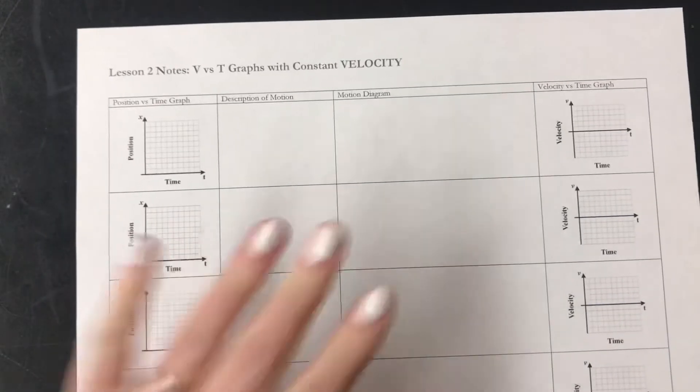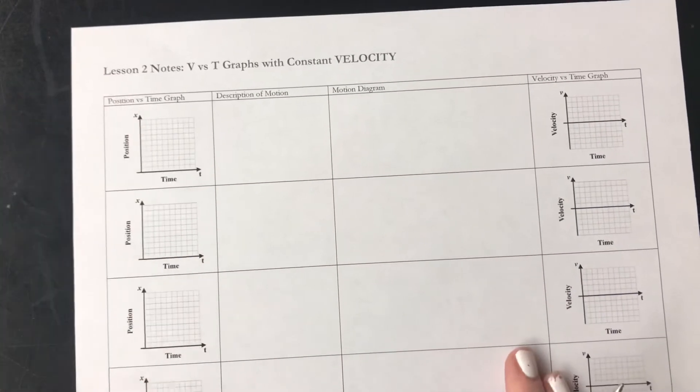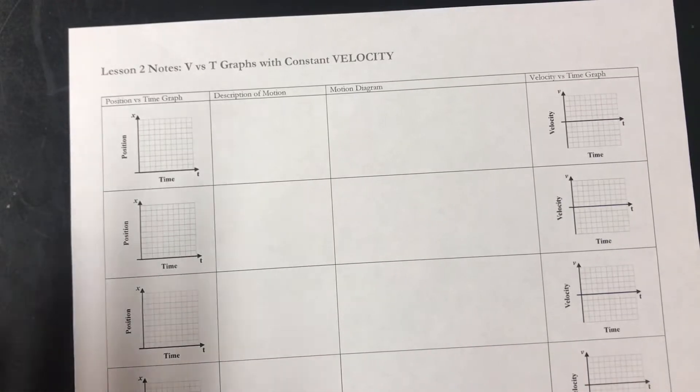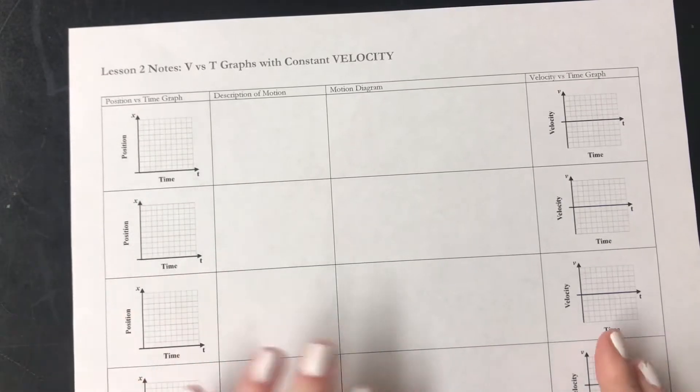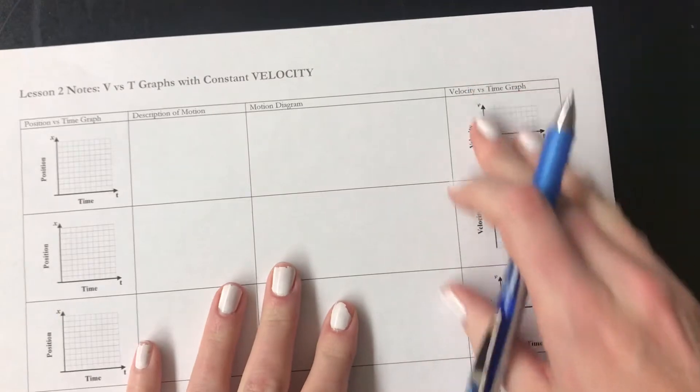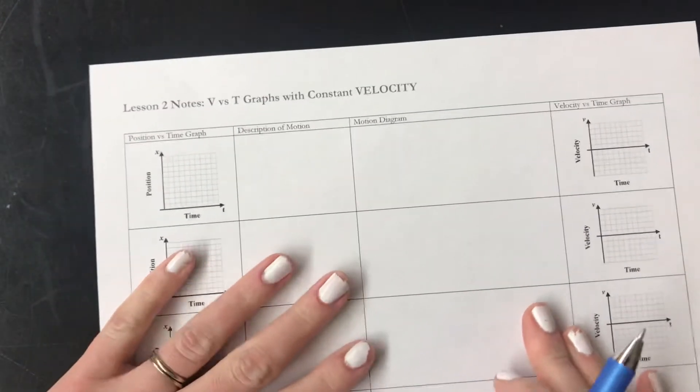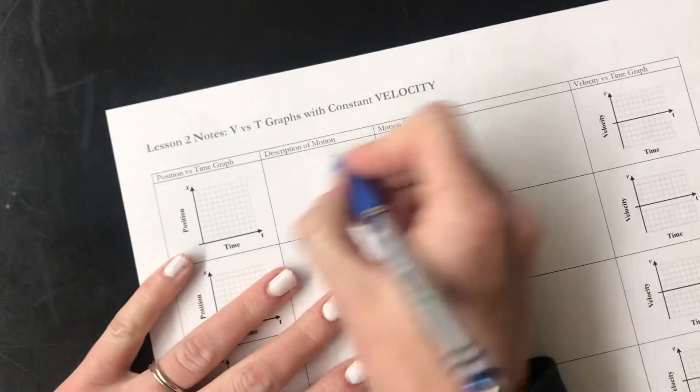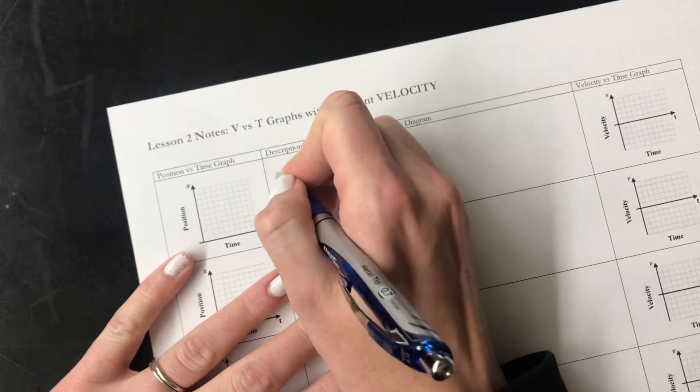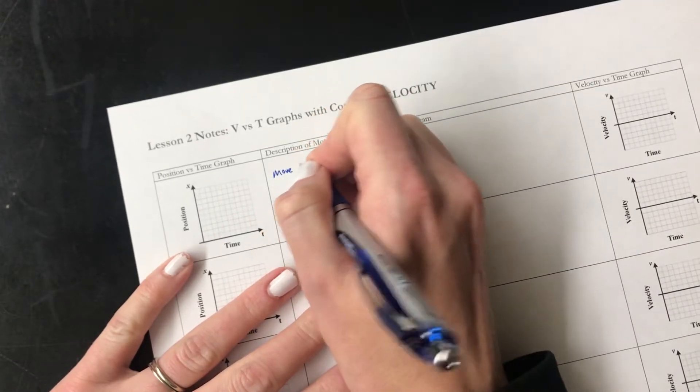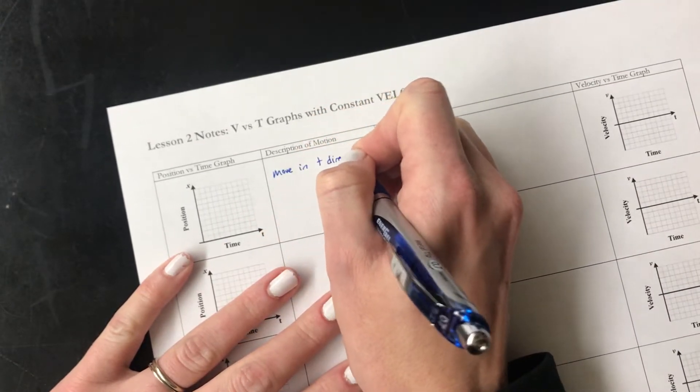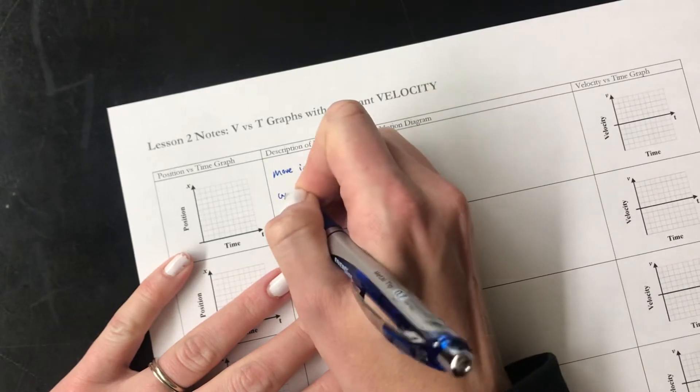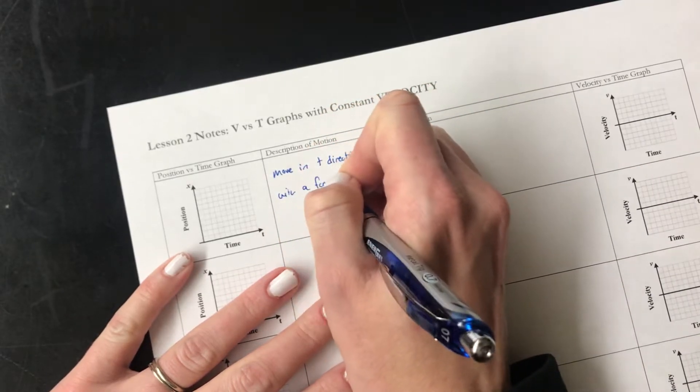We're going to start by looking at all the different possible motions that we can have with a constant velocity, and then we're going to turn them into velocity graphs. So we'll do them one at a time. So I'm going to start with the description of motion.